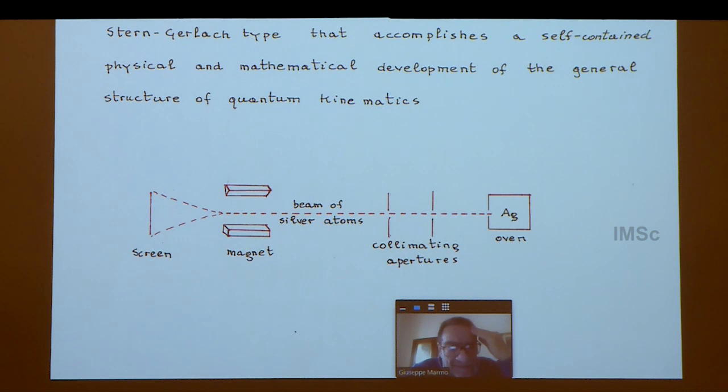All of you are familiar with this simple example: silver atoms are collimated and sent through magnets, giving the usual up and down part of the spin—spin up and spin down. Next slide, please.